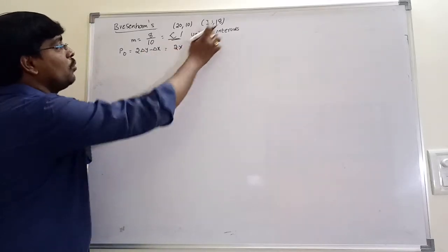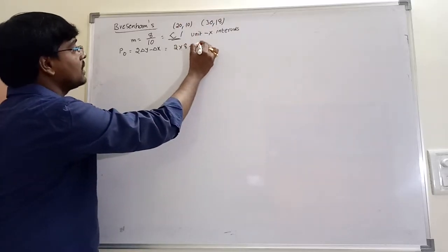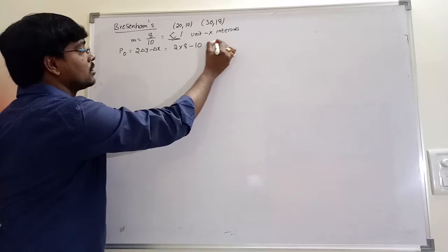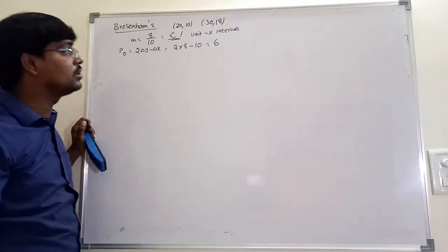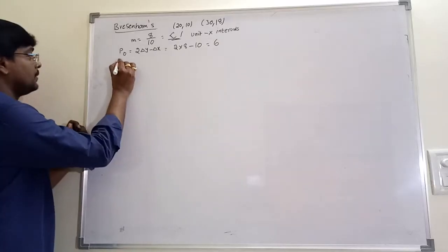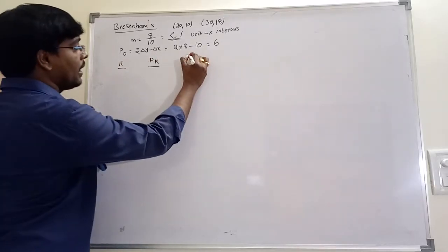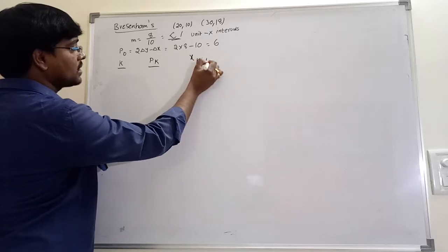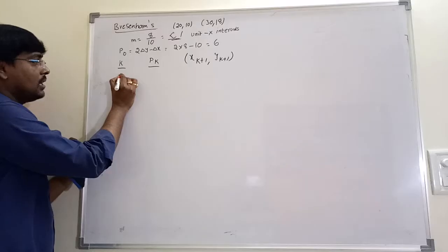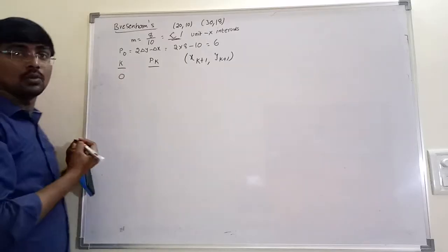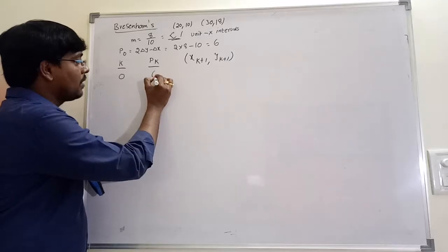2 into (y2 minus y1) is 2 into 8, minus (30 minus 20) which is 10. So 2 delta y minus delta x equals 6. For k=0, pk that is p0 value is 6. The first point is (20, 10) which is fixed.